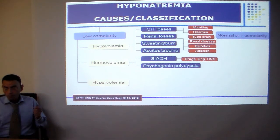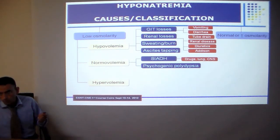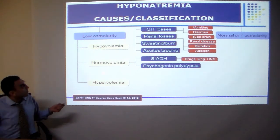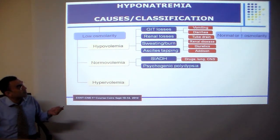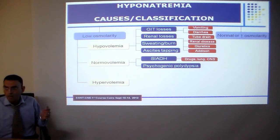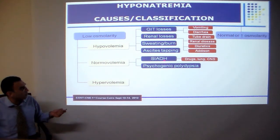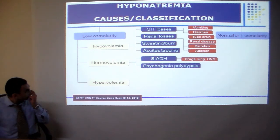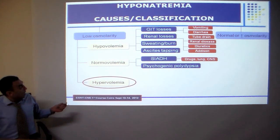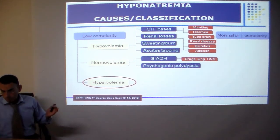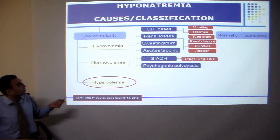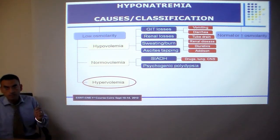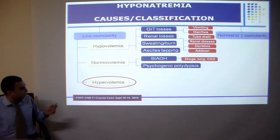The second category of hyponatremia with low osmolality is the euvolemic state. The prototype of this category is what is called syndrome of inappropriate antidiuretic hormone secretion, or SIADH. We also have the hypervolemic patient, which is very important because this will greatly differ in treatment.